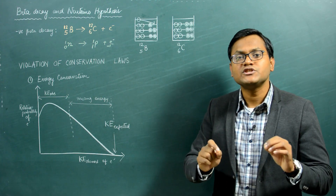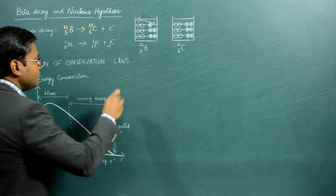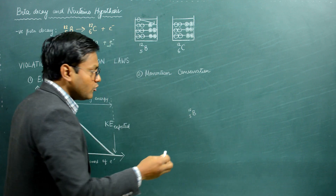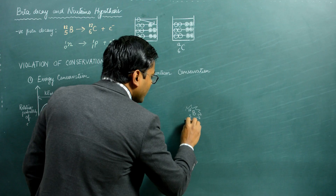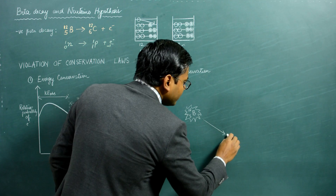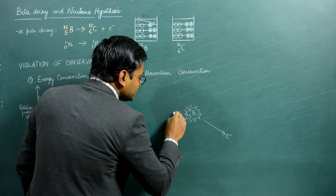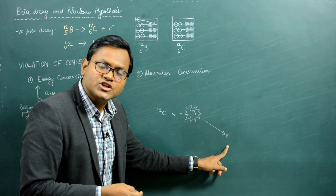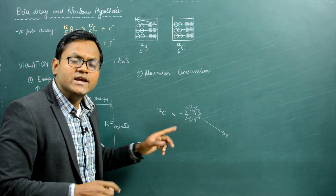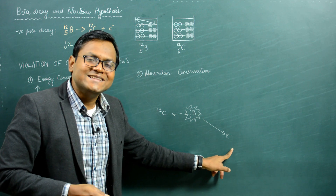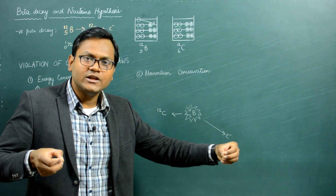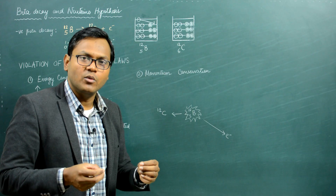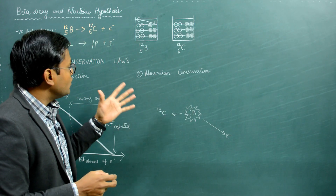Not just energy — even the conservation of momentum was seemingly violated. If you look at the directions in which the particles are emitted: suppose boron-12 undergoes radioactive decay and suddenly an electron is emitted and a recoiling daughter nucleus (carbon-12) is produced. When you study the directions in which these particles are emitted, the electron is emitted in a direction that is not exactly opposite to the recoil of the daughter nucleus. Conservation of linear momentum tells us that the two particles should move in exactly opposite directions. This recoil does not conserve linear momentum, suggesting beta decay was violating conservation of momentum.